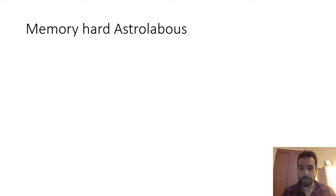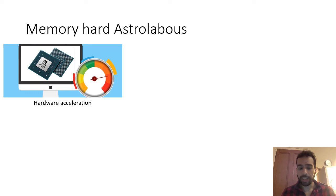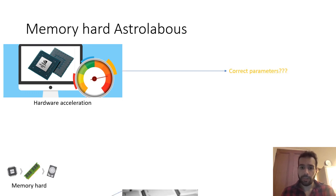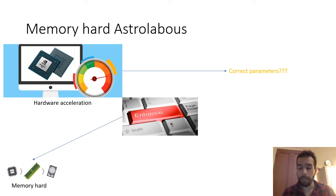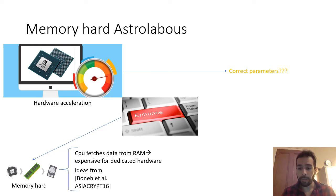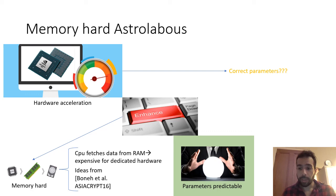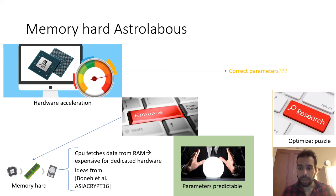Regarding our second research direction: when we create a time-lock puzzle with Astrolabos, we need to ensure that no one takes advantage of hardware acceleration and solves the puzzle faster. For that reason, we will enhance Astrolabos and make it memory-hard, which means the CPU fetches data from RAM continuously because it cannot predict which data is the correct one — and this is expensive even for dedicated hardware. We will borrow ideas from the balloon hashing paper so that we can more safely predict the correct parameters for puzzle creation, but more research needs to be done — both for applying this enhancement to Astrolabos and for ensuring that puzzle generation remains efficient.